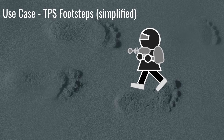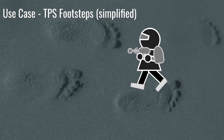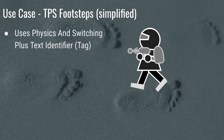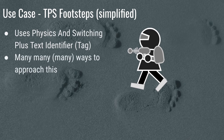Let's give a little bit of a conceptual basis on how we do a third-person kind of game. Basically, in a third-person game you have an avatar that has feet. In this case you have a player with footsteps, so you can look at the footsteps and use those as a basis for what you want to do. It's going to use physics and switching plus an identifier — usually a tag. There are a lot of different ways to approach this, and this is merely one of them.